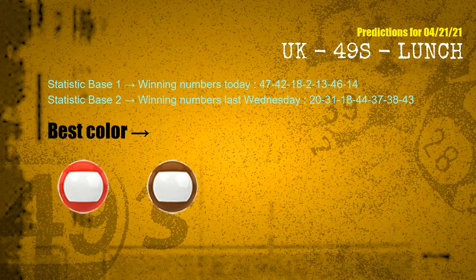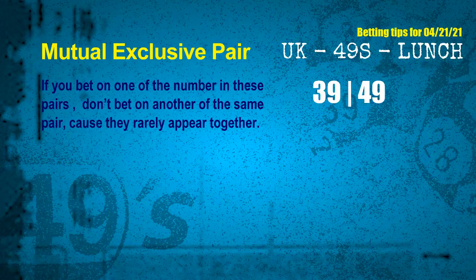According to the statistics above, with winning numbers today — 47, 42, 18, 02, 13, 46, 14 — and winning numbers last Wednesday — 20, 31, 18, 44, 37, 38, 43 — the frequent following colors are red and brown. Now we have some following ones and ball colors. Here are some tips to increase hit odds, such as mutual exclusive pairs.